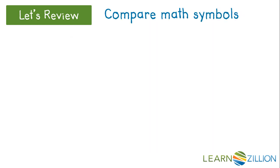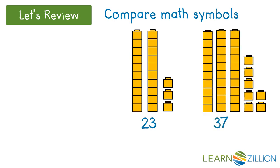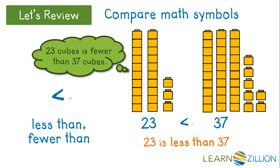This is another math compare symbol. 23 cubes, 37 cubes. We know that 23 cubes is fewer than 37 cubes. 23 is less than 37. This is a symbol we use for less than or fewer than.